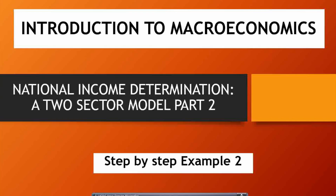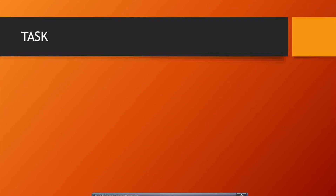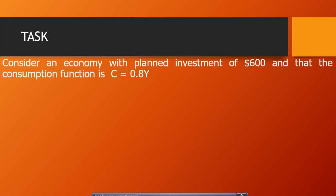We continue with the two-sector model of national income determination. This is part two of what was presented earlier on the two-sector model — a step-by-step example from the introduction to macroeconomics. My name is Elias Mouau. Consider an economy with planned investment of $600 and a consumption function C equals 0.8Y.